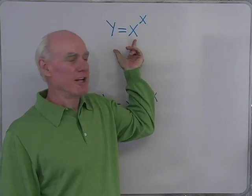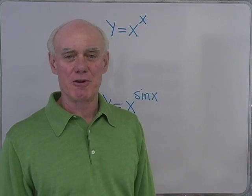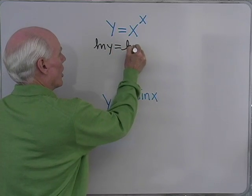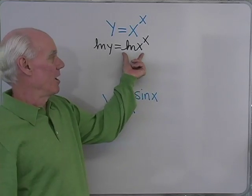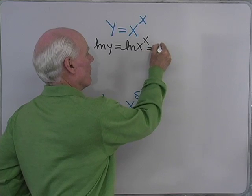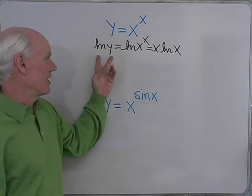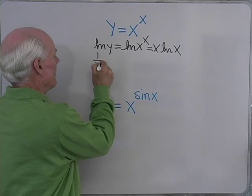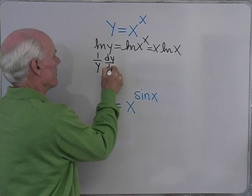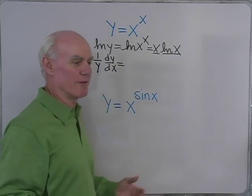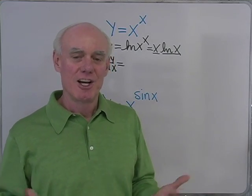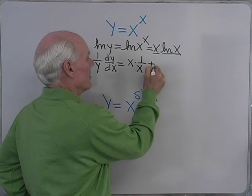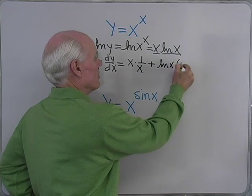Let's try another problem. Here I have y equal x to the x. My exponent contains the variable, so I'm going to use logarithmic differentiation and take the logarithm of both sides. So I'll have natural log y is equal to natural log of x to the x. Now I apply my properties of logarithms to write this exponent x as a coefficient: x log x. Now I can differentiate left to right using implicit differentiation. The derivative of log y is 1 over y dy/dx equals — here I have the product rule: the product of two functions of x, x and log x. So I have the first, x, times the derivative of the second, 1 over x.